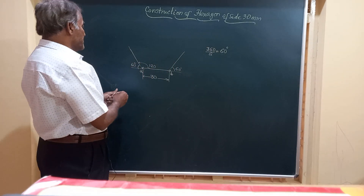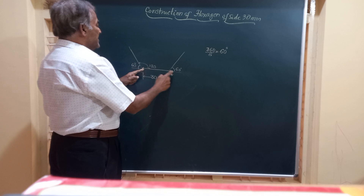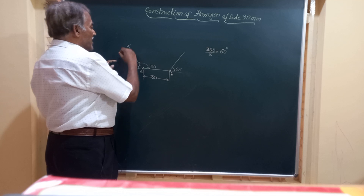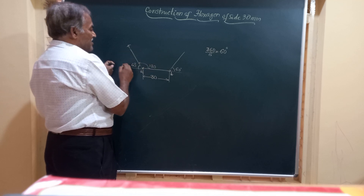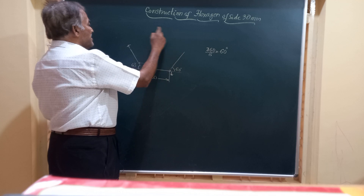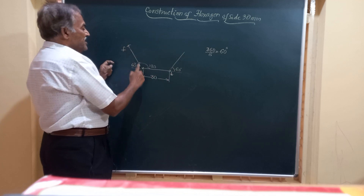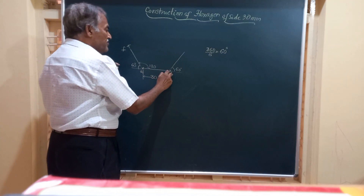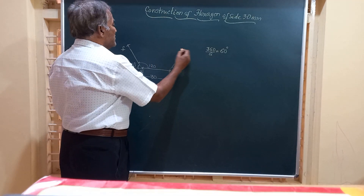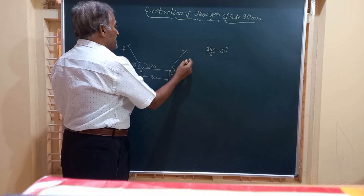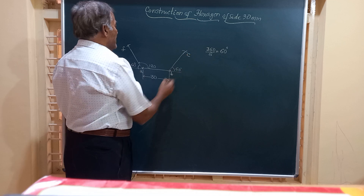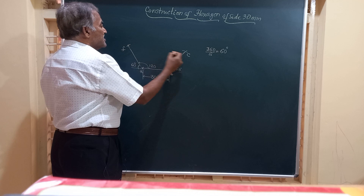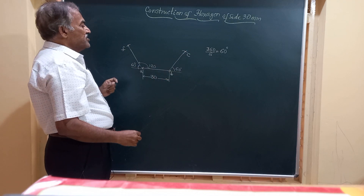Since we know the side of this hexagon is 30 mm, taking center A and radius equal to 30, I draw an arc to cut this line — this point is F. So AF is the second side. Similarly, at point B, taking B as center and radius equal to 30 mm, I draw another arc — this point will be point C. We now have three sides of the hexagon.